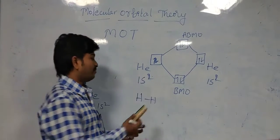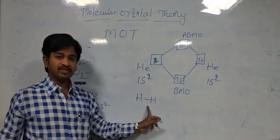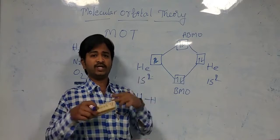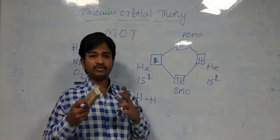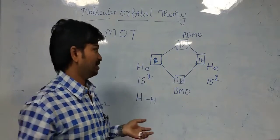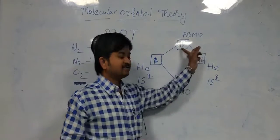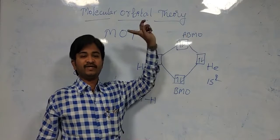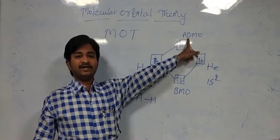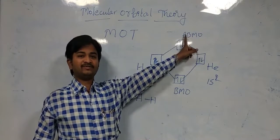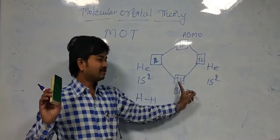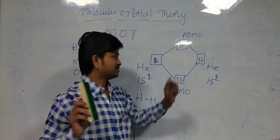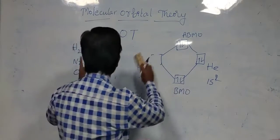We can form a bond only for hydrogen. Why? Because the enemy (anti-bonding) has less energy, and good people (bonding) have more energy — so they can easily become friends. No electron should be in the anti-bonding orbital. If there is energy in the enemy's pocket, we will be in danger. The good person should have more energy — then we will be in peace.